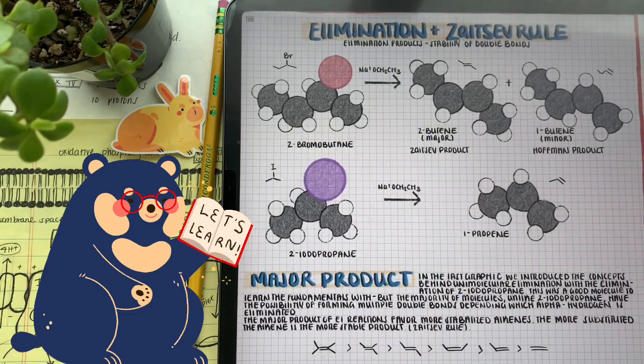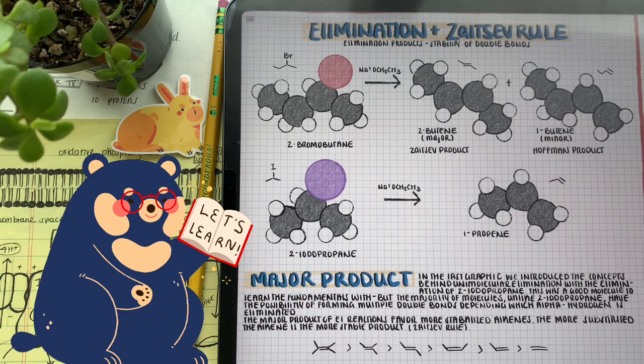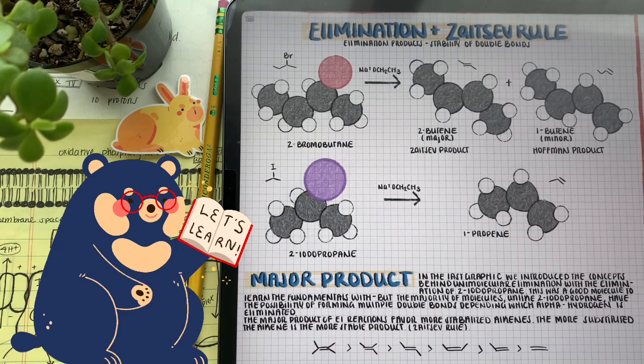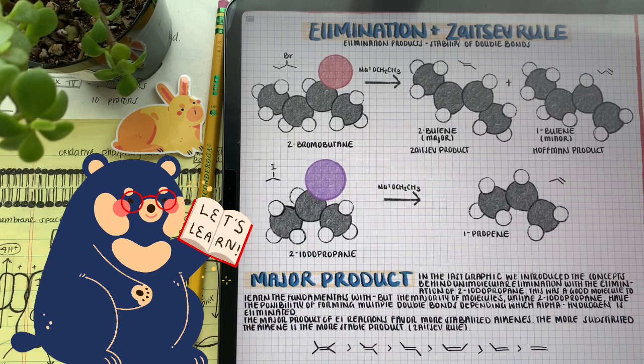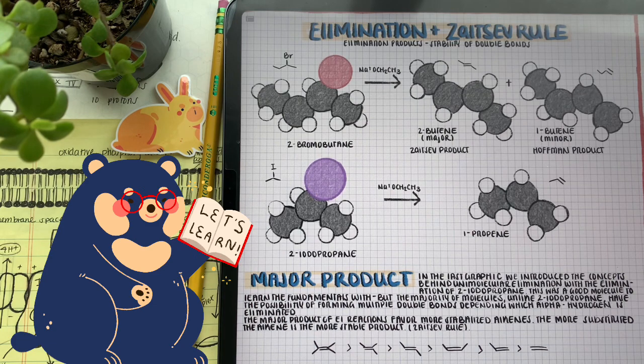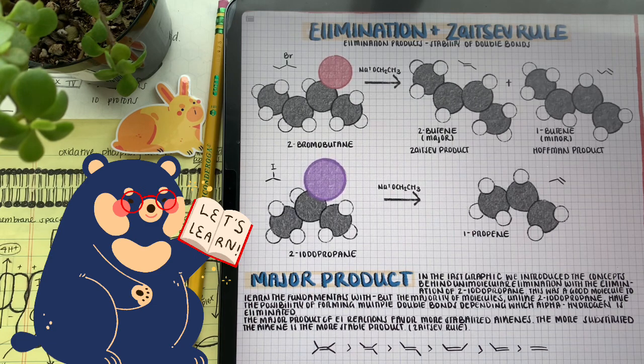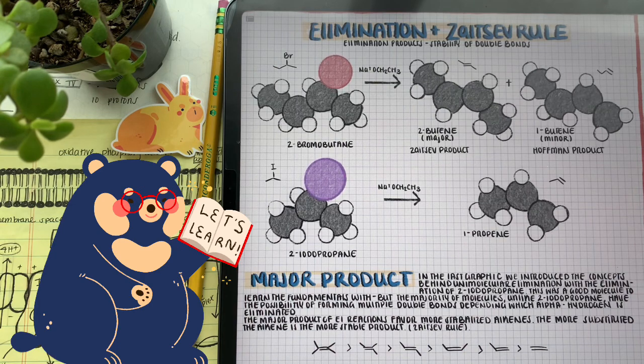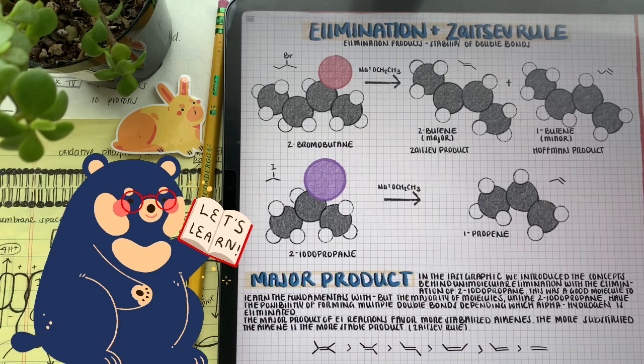We've been looking at the elimination process of 2-iodopropane, but what about 2-bromobutane? In this process, we have two different beta carbons, and one product is going to be the major and one is going to result in the minor, and it all depends on how substituted the formed double bond is.